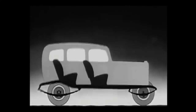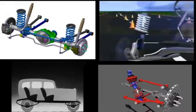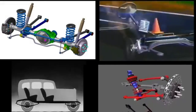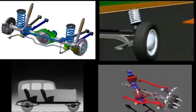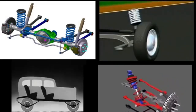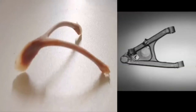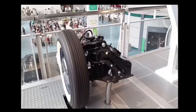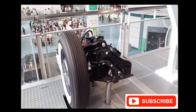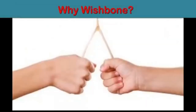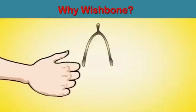Engineers have tried many designs — from leaf springs, flexible bars, to hydraulic springs — but nothing was better than the natural design of a wishbone suspension system. A wishbone suspension system replicates the design of a bird's wishbone.